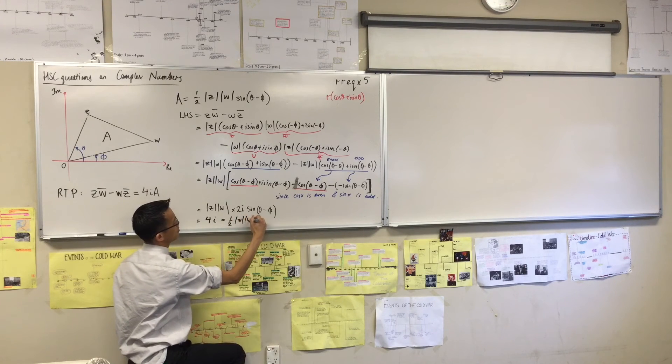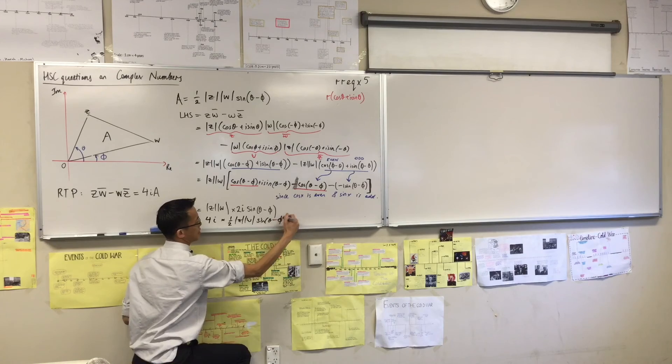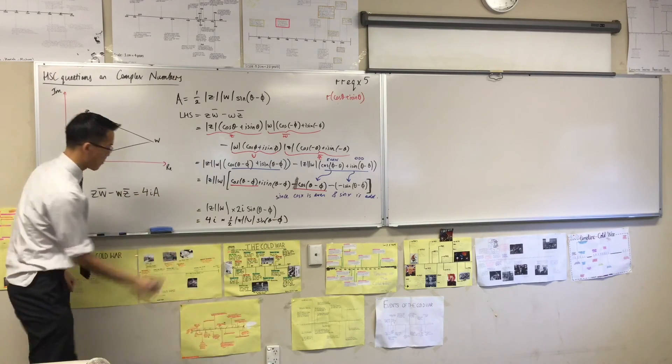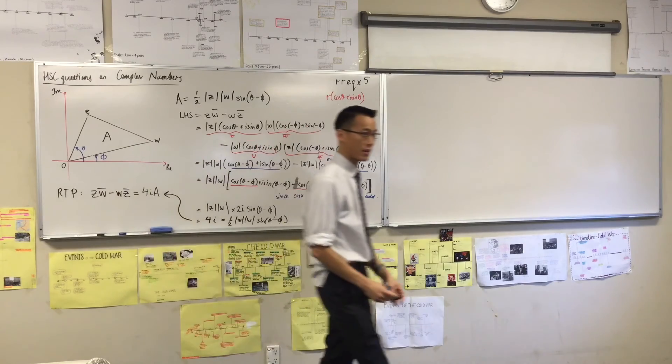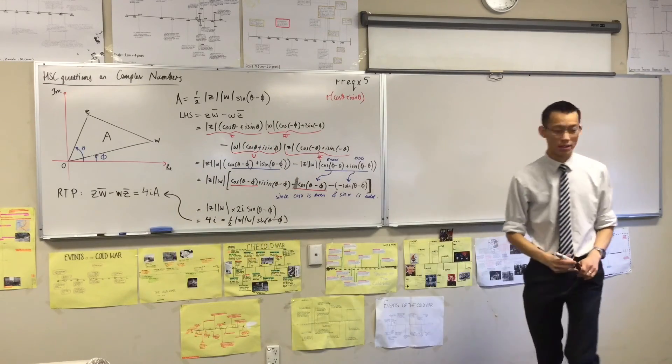Mod z, mod w, sine theta minus phi. And I've run out of space on my whiteboard, but conveniently, I have already written the result I'm going to end with. Okay, so that will be your final line.